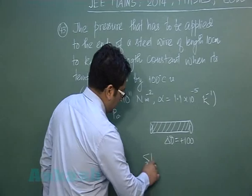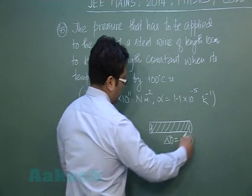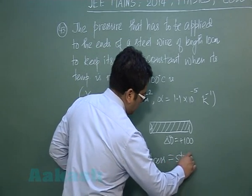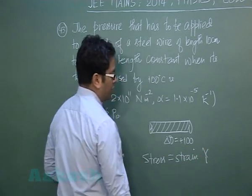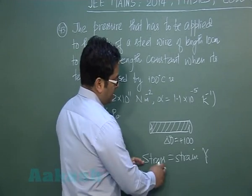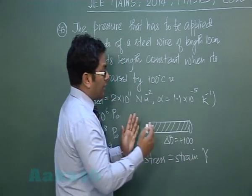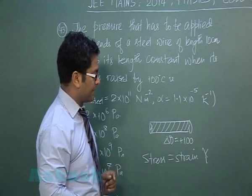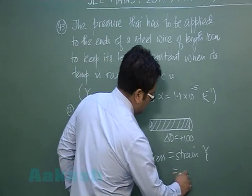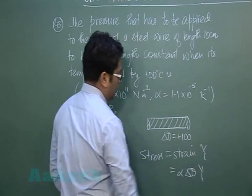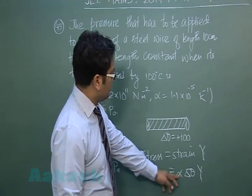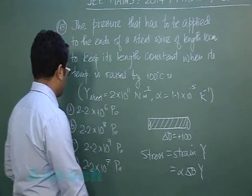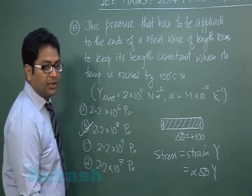The thermal stress generated equals strain into Young's modulus. This is the stress developed when the rod is not allowed to expand, and quite obviously the same would be the value of pressure. Strain is alpha times delta-theta, multiplied by Young's modulus Y. Alpha for steel is given, Young's modulus for steel is given, delta-theta is given — on calculation that easily yields option number B.